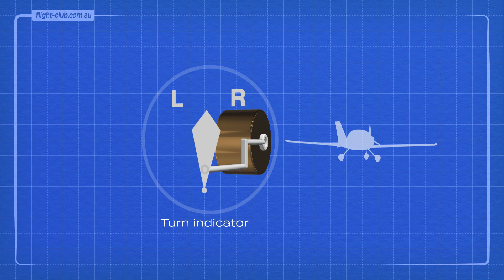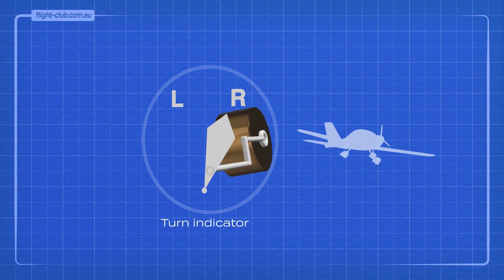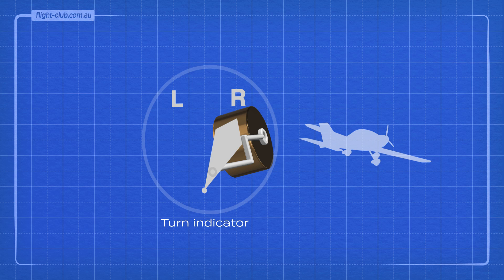When the aeroplane turns or changes direction to the right, for example, the precession effect causes the rotor to tilt and drive the instrument pointer to indicate a right turn.